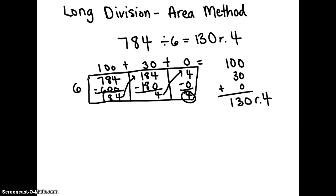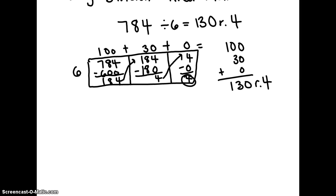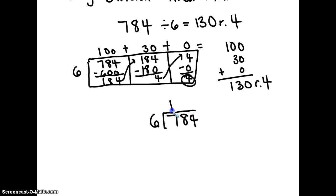Now we're going to check it with the ordinary long division method. How many times can six go into seven? One time. Six times one equals six. What is seven minus six? One.